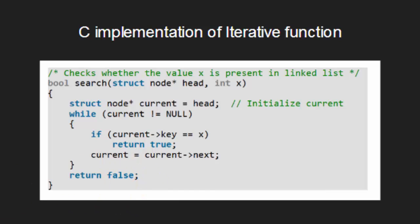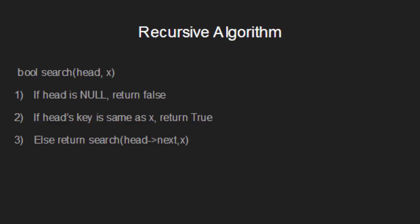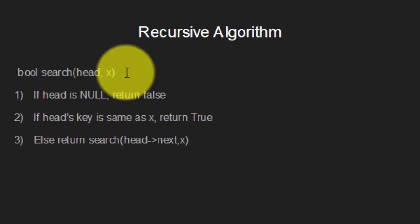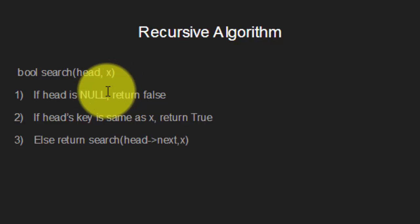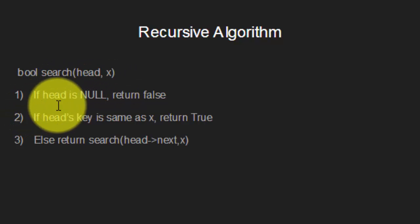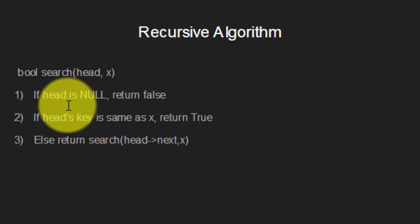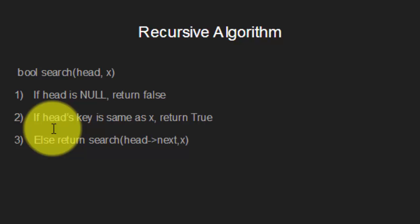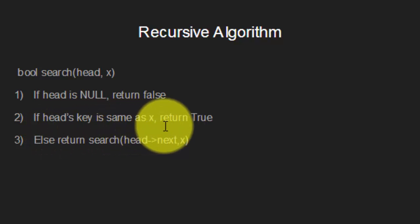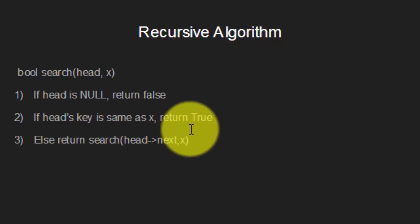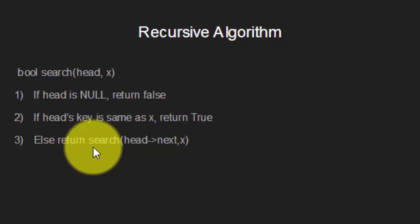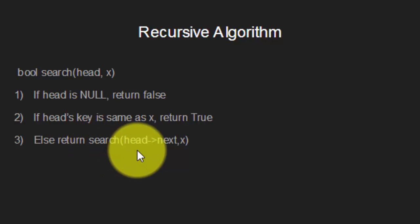Let us now move to the recursive solution. The recursive function also takes the same arguments as the iterative function: the head node of the list and the key to be searched. It checks whether the supplied node is null or not. If it is null, it means either the list is empty or we have reached the end of the linked list, so the function returns false. Otherwise, if the supplied node is not null, it checks whether the key of the supplied node is equal to the given key x. If it is equal, the function returns true. Otherwise, the function recursively calls itself to check whether the element is present in the rest of the linked list and returns accordingly.